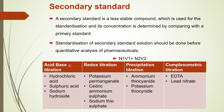Some examples of secondary standards: in acid-base titration — hydrochloric acid, sulfuric acid, and sodium hydroxide; in redox titration — potassium permanganate, ferric ammonium sulfate, and sodium thiosulfate; in precipitation titration — ammonium thiocyanate and potassium thiocyanate; and in complexiometry — EDTA.